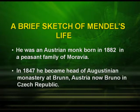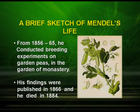He was an Austrian monk, born in 1822, in a peasant family of Moravia. In 1847, he became the head of Augustinian Monastery in Brno, Austria. From 1856 to 1865, he conducted breeding experiments in the garden pea in the monastery. His findings were published in 1866 and he died in 1884.